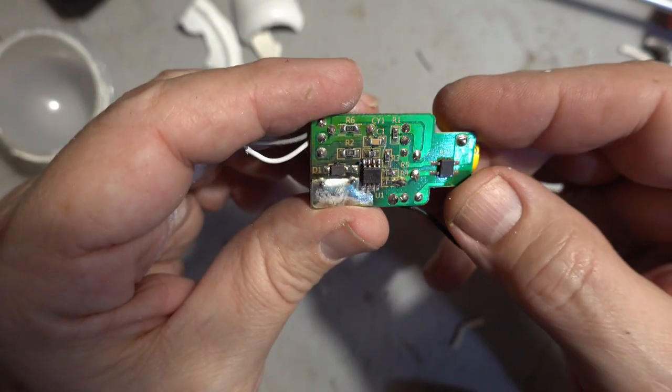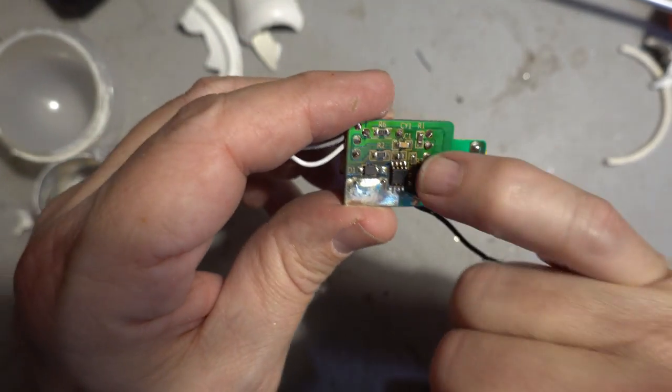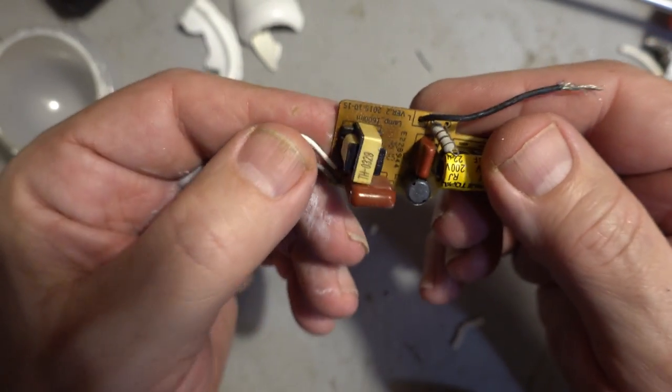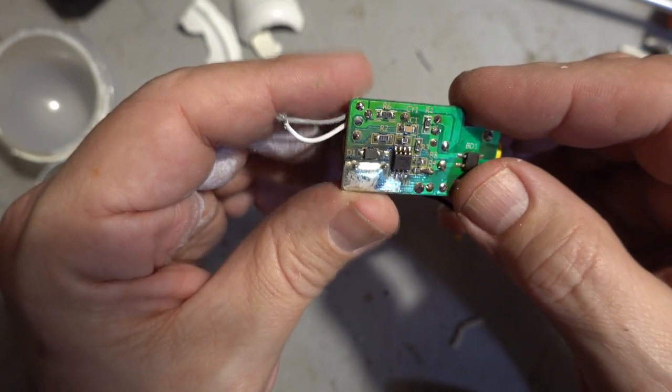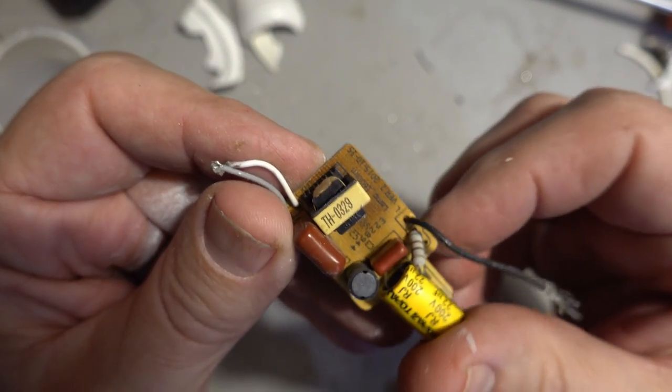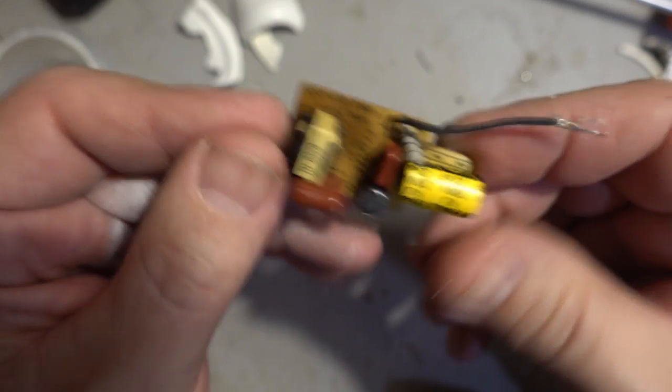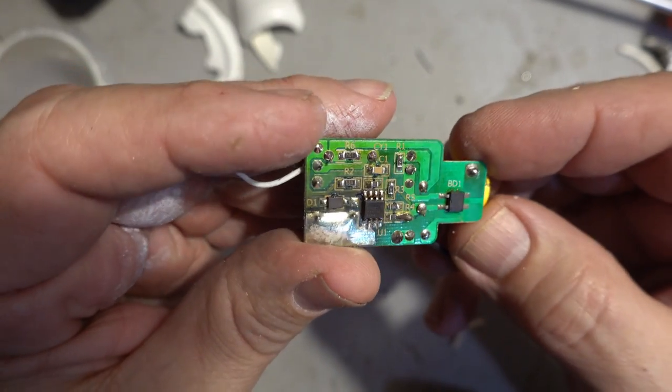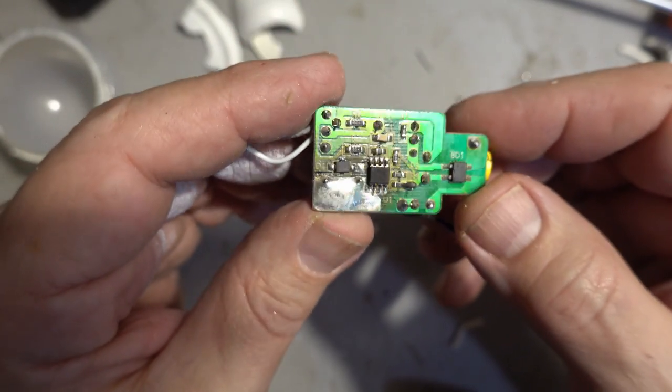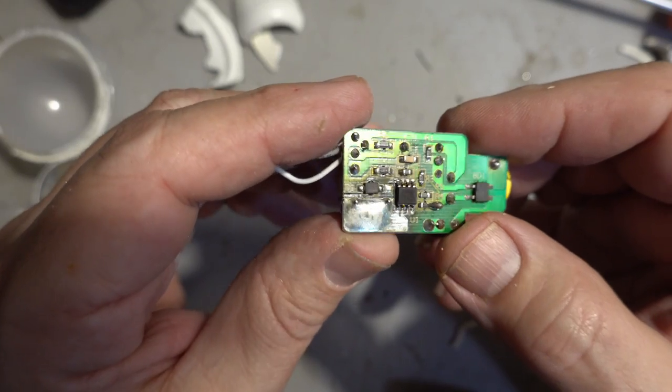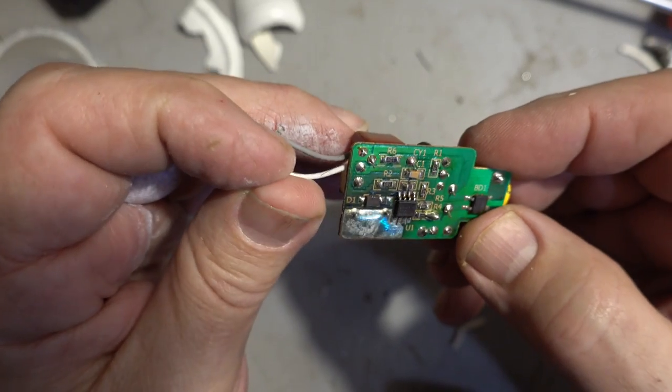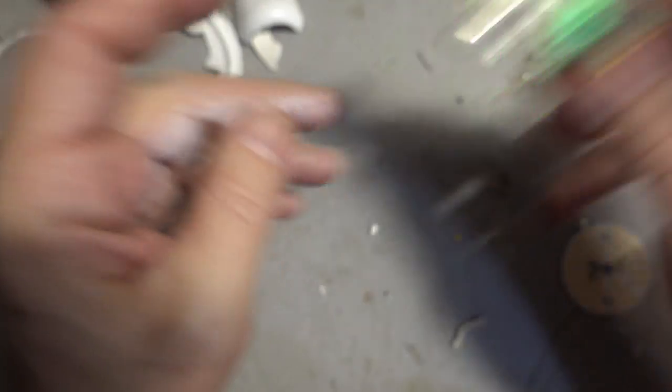This part I'm pretty sure is going to be a current driver, a little switch mode current driver. And you can tell the board's a little brown there, it's a little burned. So this might just be completely dead. But I'm not really sure. I don't want to keep this, this isn't really worth anything, it's just a completely crappy power supply. Just interesting how it's made.